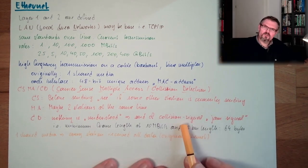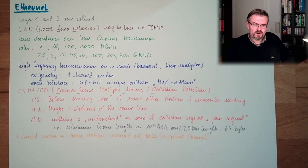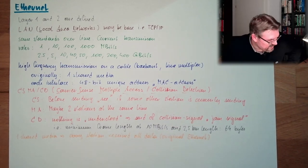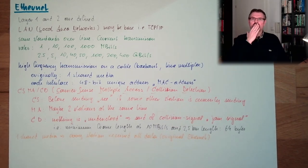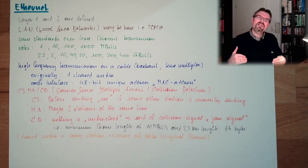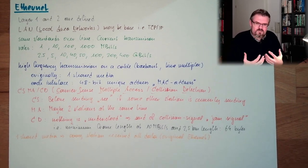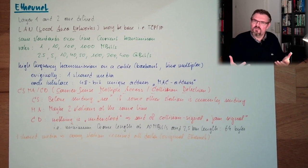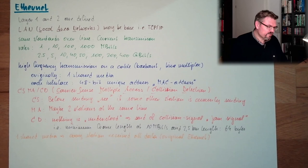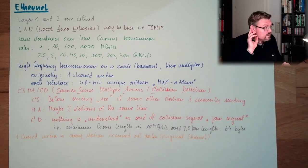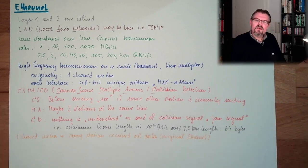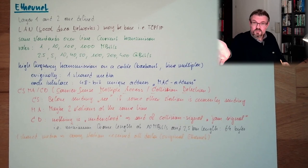What is happening when a collision is detected? The sender stops sending, then waits a certain time — it's not a fixed time, it's a random time — and then starts again: listening, and then sending. So this is what is done in collision detection. The more stations there are, the more likely it is that there is a collision, and so the more performance will decrease.